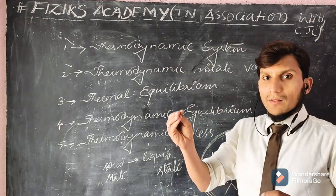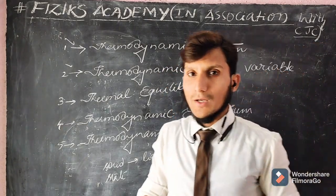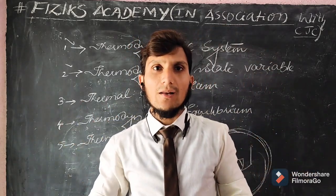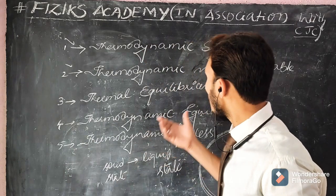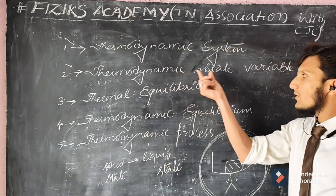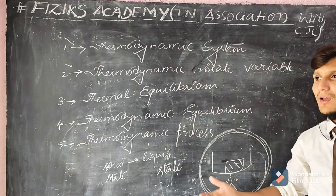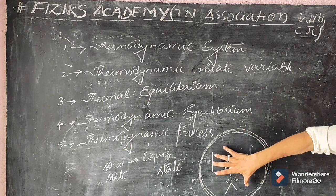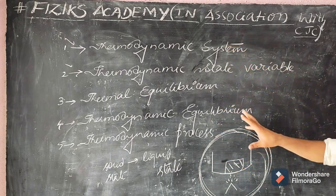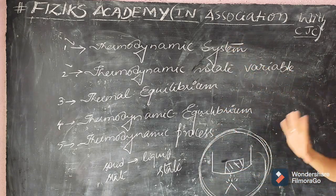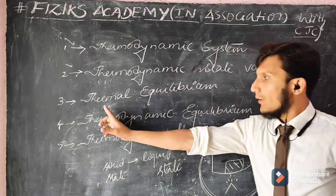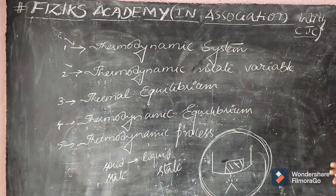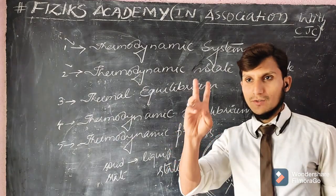A variable is a physical quantity which is able to vary. So thermodynamic state variables are the variables which correctly explain a thermodynamic system — which is nothing but a particular area under study.